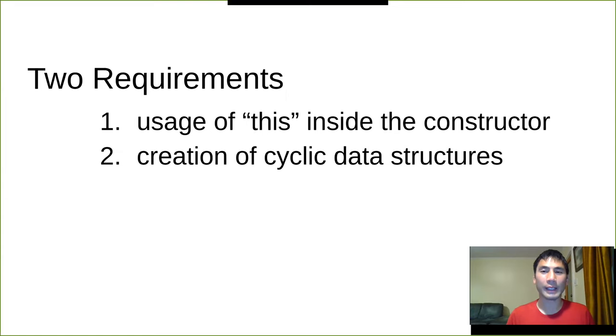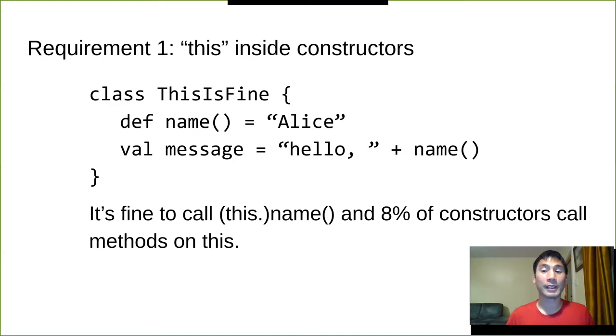There's two requirements that the authors point out. The first is that often the this reference is used inside the constructor. Here's an example. There's a class that defines name Alice. This method is fine, it just returns a value. And then it contains a method which calls this.name. In fact, it's fine to do that. Empirically, 8% of constructors call methods on this. So this is something that the authors have decided ought to be supported.